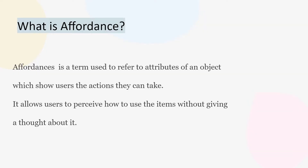Let's understand affordance with the help of these pens. If I want to use this pen it needs to be pushed, so this pen affords to be pushed. However, if I want to use this other pen, the cap needs to be pulled away. So affordance refers to the attributes of an object that show users the action they can take — to afford is to give a clue as to what action the object supports.